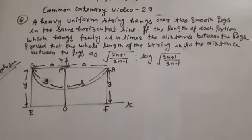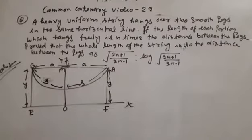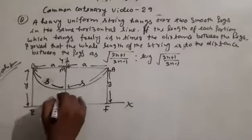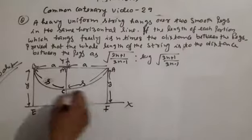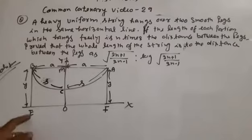A and B are the pegs and the distance between the pegs is 2a. Let the distance be 2a, and let the string ACV have total length 2s.